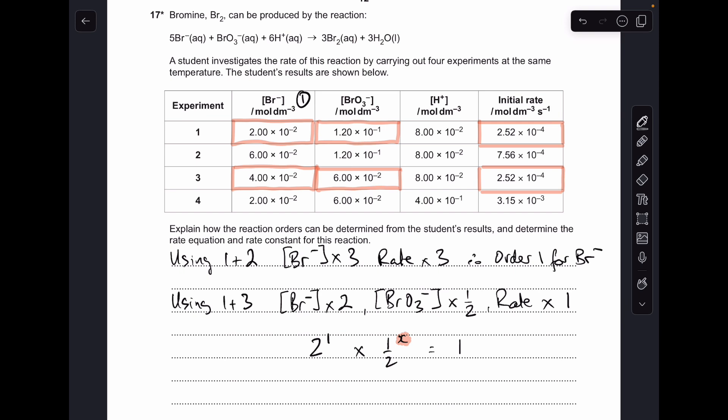And obviously x has to be power one, because two to the one times a half to the one does equal one. So we now know that BrO3- ion is first order.